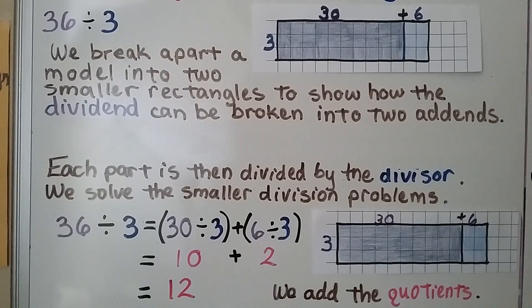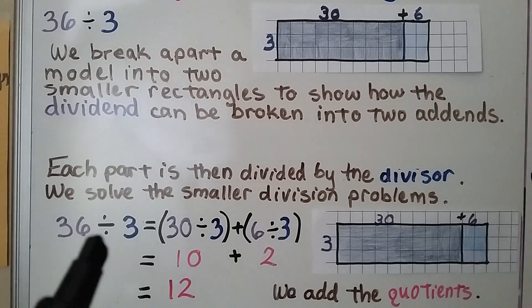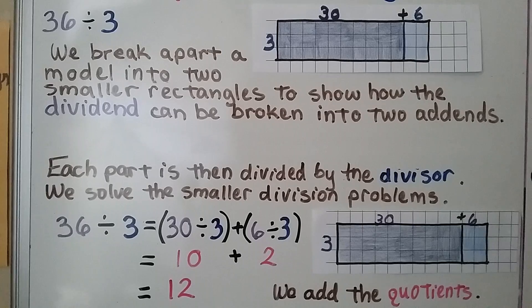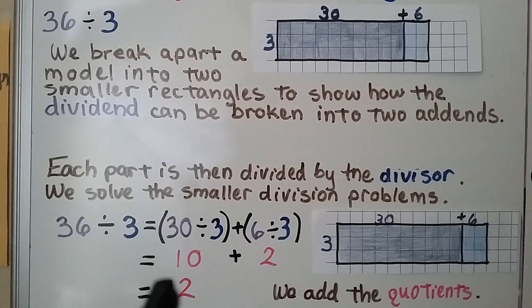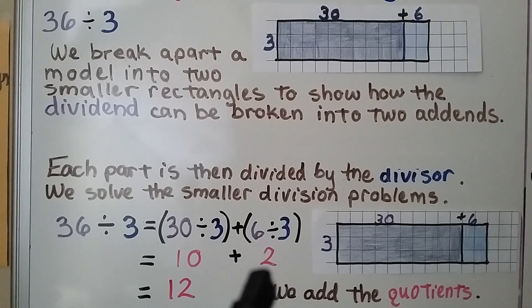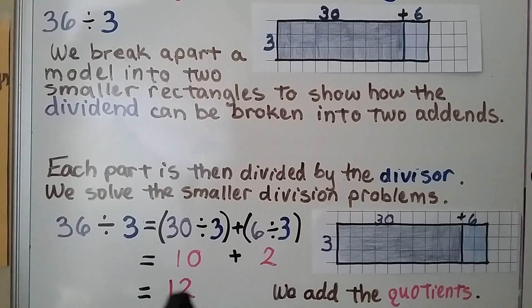Each part is then divided by the divisor, this 3. We solve the smaller division problems. 30 divided by 3 is 10. 6 divided by 3 is 2. 10 plus 2 is 12. We get 12 when we add the quotients.